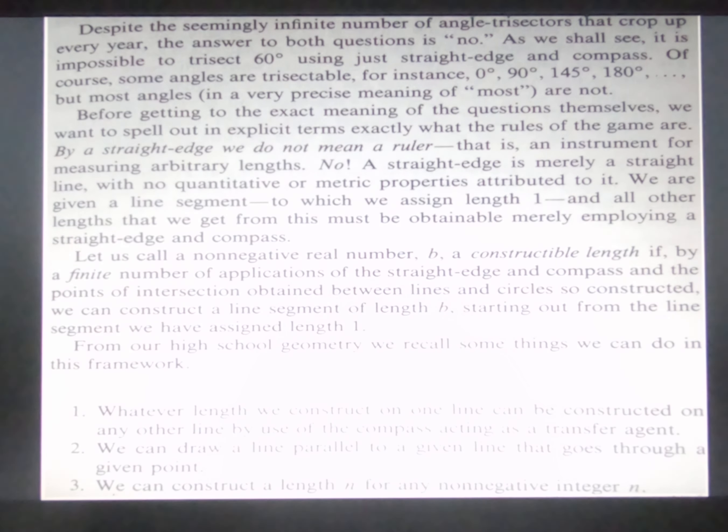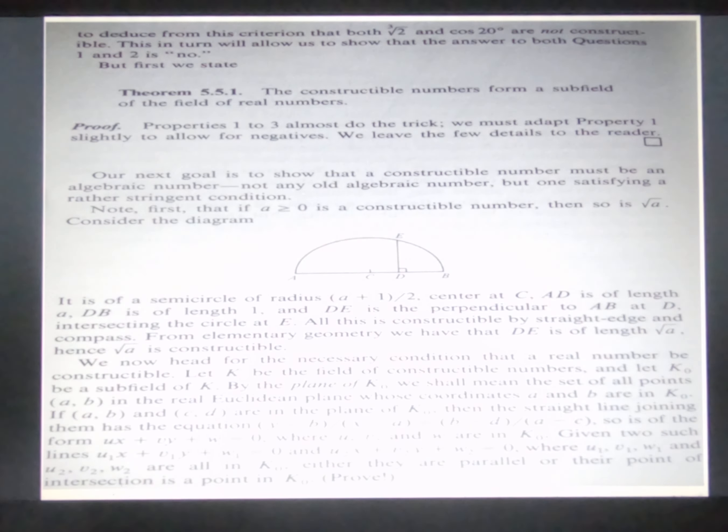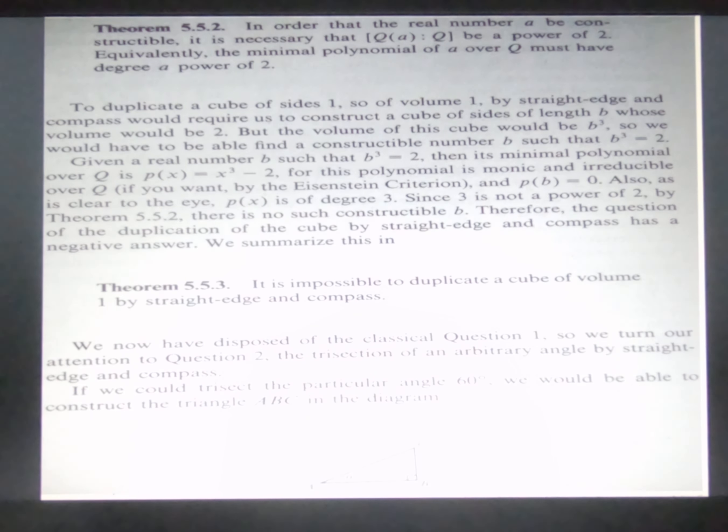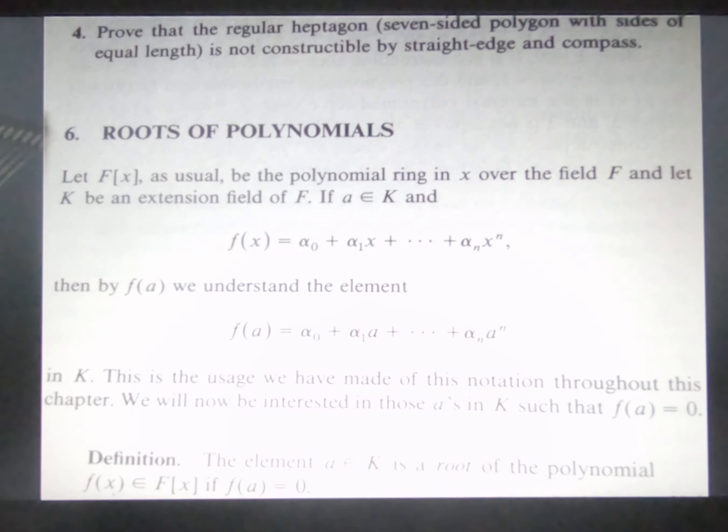Constructability. These are some Greek questions. Question 1 and question 2. Is the application in these two questions. So you can see it is impossible to trisect 60 degree by triangle and compass. Due to a polynomial.